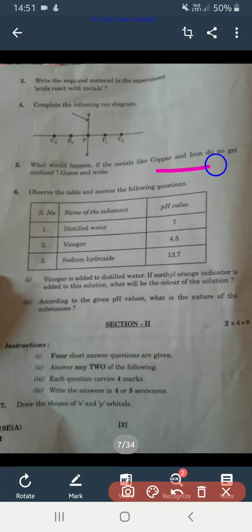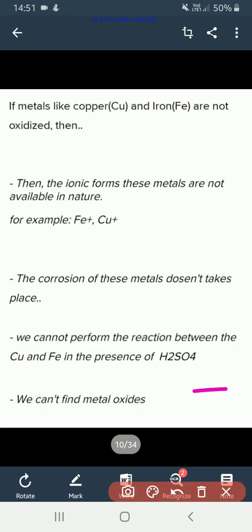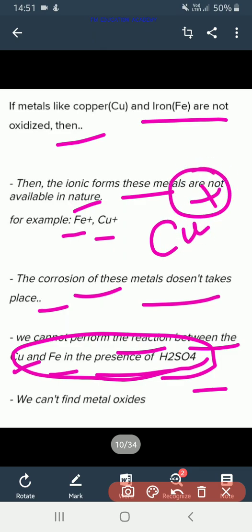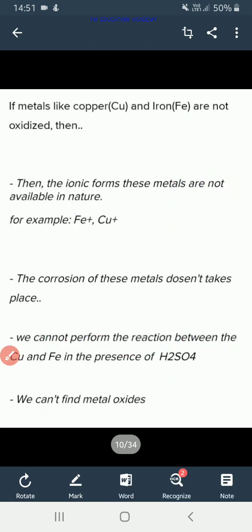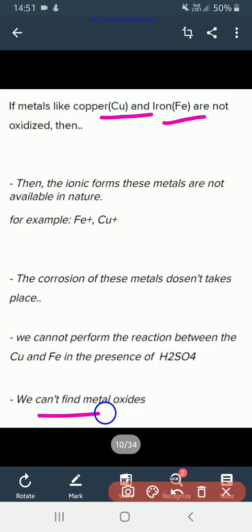Fifth question, what would happen if the metals like copper and iron do not get oxidized? If metals like copper and iron are not oxidized, then ionic forms that is Fe+ and Cu+ will not be available in nature and corrosion of these metals won't take place. We cannot perform the reaction between the copper and iron in the presence of H2SO4 because whenever we perform reactions, we need ions either plus or minus. We will not find out metal oxides because copper will not react with oxygen and also iron will not react with oxygen. So metal oxides won't be formed.